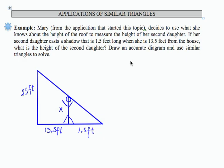In this example, we're asked to use similar triangles to continue an application problem that was mentioned earlier. Mary decides to use what she knows about the height of the roof, this was of her house, to measure the height of her second daughter.